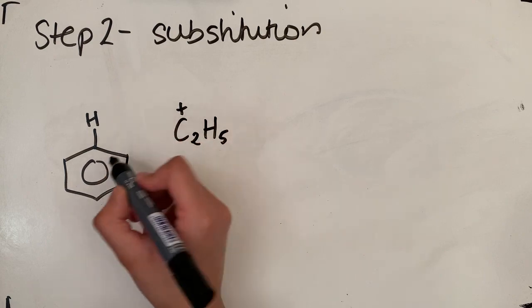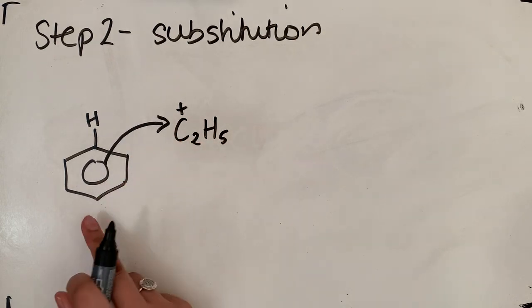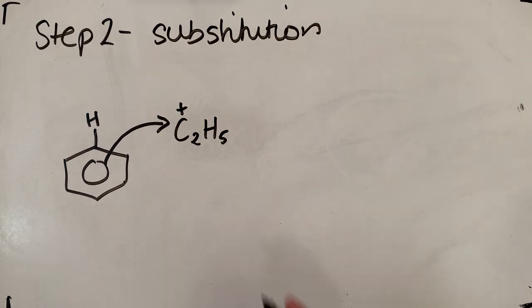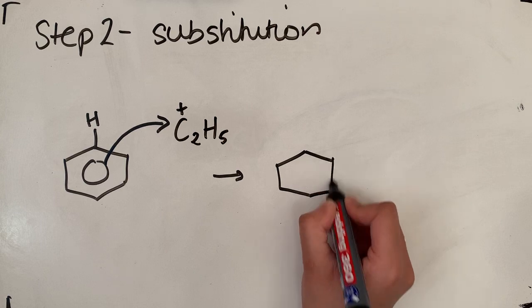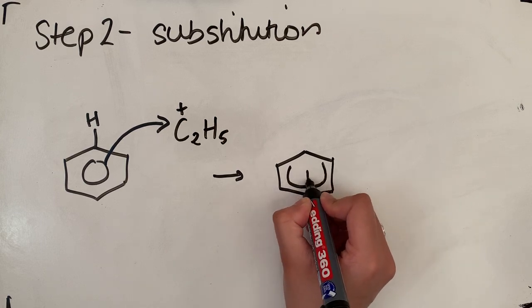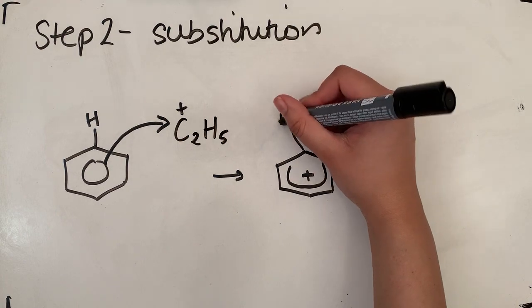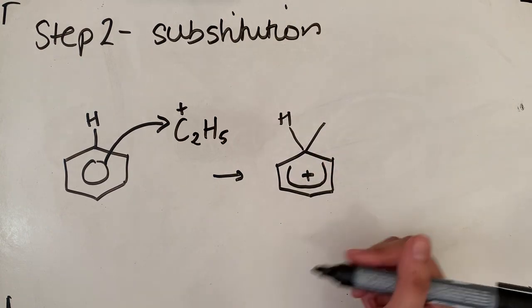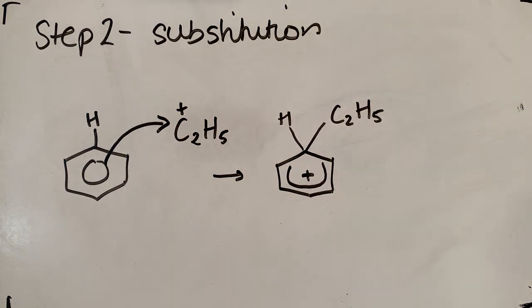We're now disrupting that delocalized ring and we're going to form that horseshoe in our benzene ring. Still got our hydrogen there. We've now formed a bond with our ethyl electrophile there.